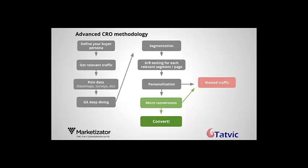A conversion rate optimization methodology which is far more advanced is: first, you need to define your buyer persona. You need to do your homework and find out who your buyer personas are — their age, their pain points, their needs, and things like that. Then get relevant traffic according to this buyer persona, get pain data based on heat maps, surveys, or user experience audits, and then go to Google Analytics and do deep diving in order to build proper segments.